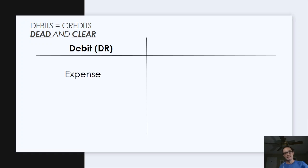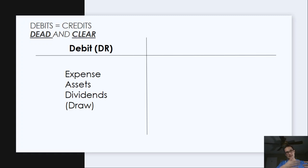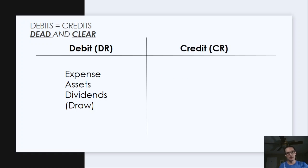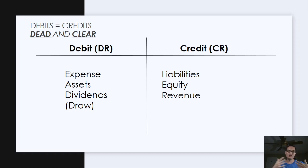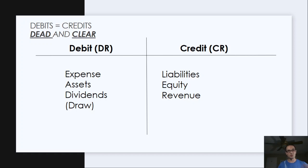So DEAD: D is debit, E is expense, A is assets, and D is dividends or draw account. All of our debit normal balances — accounts that increase with a debit — are expense, assets, or dividends. And then CLEAR represents our credits: C is credits, and they include liabilities, equity, and revenue. Liabilities, equity, and revenue increase with a credit; expense, assets, and dividends increase with a debit.